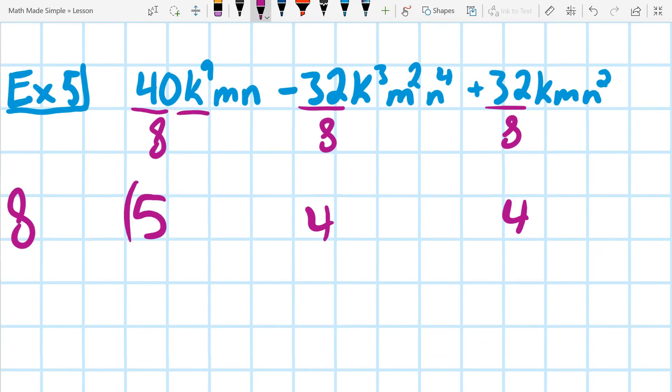The next thing we're going to look at is the variable k. And you can see that I have at least 1k in each one. So I know I can take out a k. What's the smallest exponent on the k's? It's actually going to be this last one just has 1k. So I can only take out 1k. So that one's gone, but what about the rest of them? Well, 3 minus 1 is 2. And 9 minus 1 is 8. So we have k to the 8th, k squared.